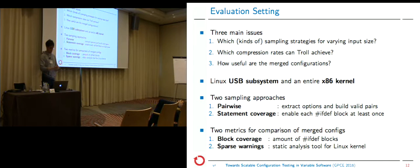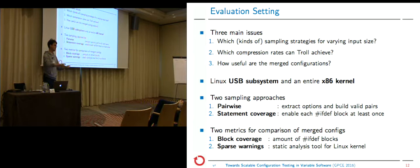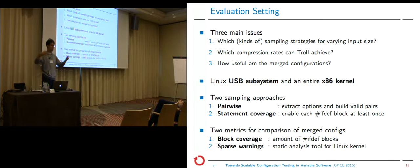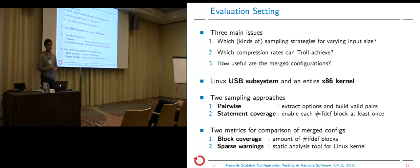Now for the evaluation. We were interested in three main issues. The first is which sampling strategies can we use. Different sampling algorithms have different runtimes — combinatorial ones naturally take longer. We wanted to figure out how large the input can be for different sampling algorithms, also because they have different fault detection capabilities and, as we heard from Mustafa, feature interactions should be covered.